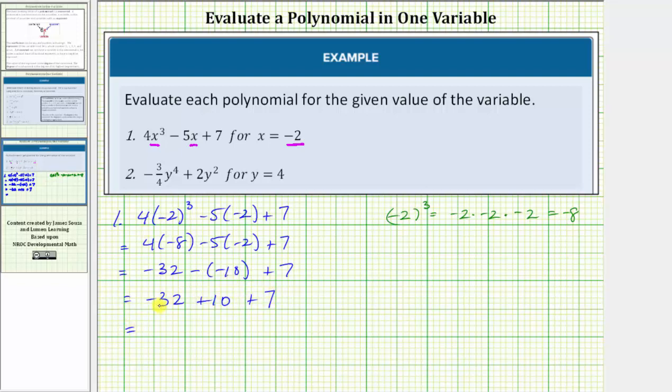Adding from left to right, negative thirty-two plus ten is equal to negative twenty-two. And negative twenty-two plus seven is equal to negative fifteen.